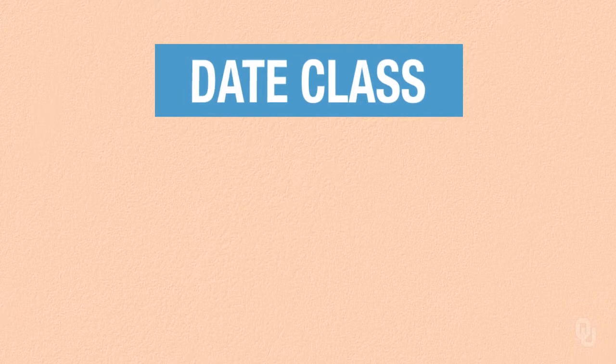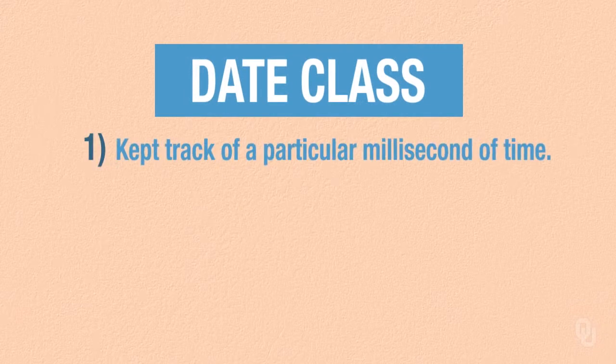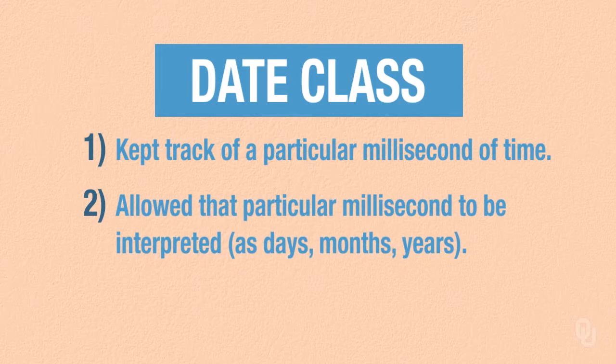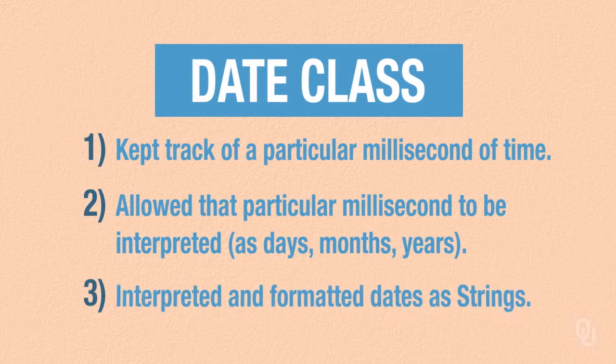So what happened to the Date class? Well, the original Date class had three main goals: it kept track of a particular millisecond of time, it allowed that millisecond to be interpreted as days, months, and years, and it interpreted and formatted dates as strings. That's too much work for one class. But there's a deeper problem. Java was designed to be used in software around the world. Just as different countries use different languages, calendars are also not completely standardized. By mixing together the millisecond in time and the Western Gregorian calendar interpretation, Java was made unable to work with other kinds of calendars.